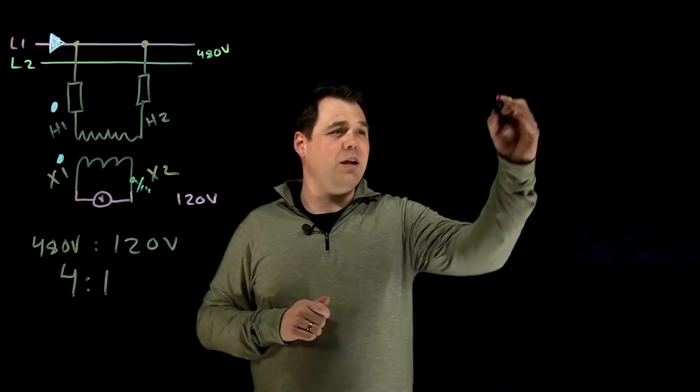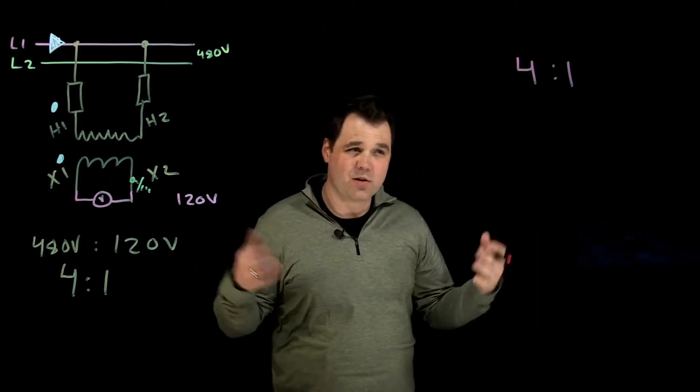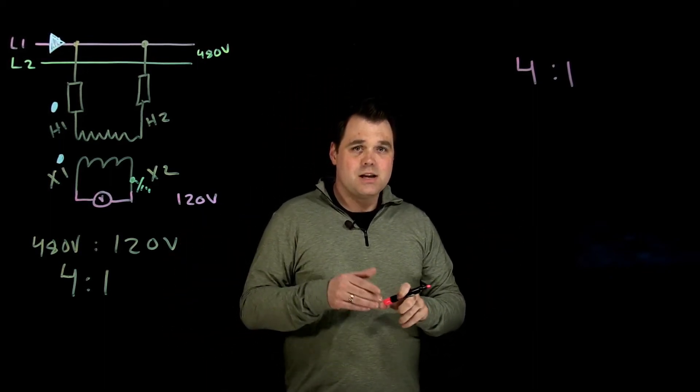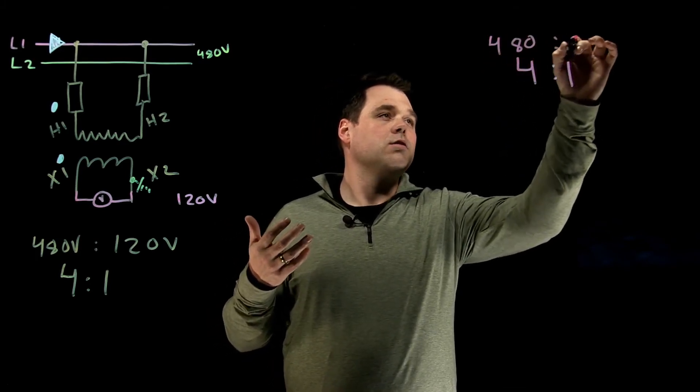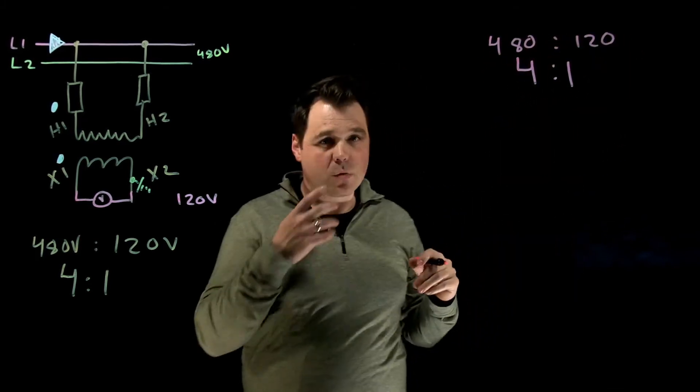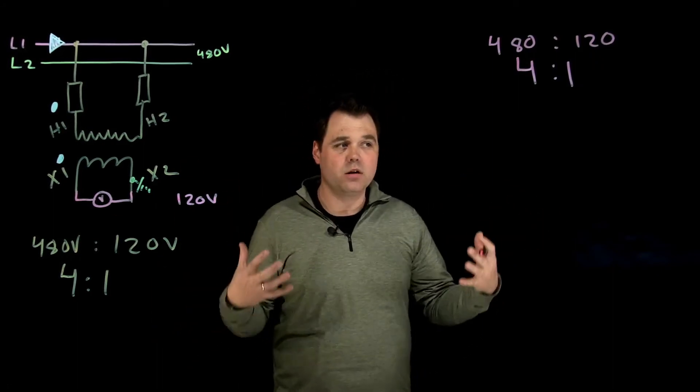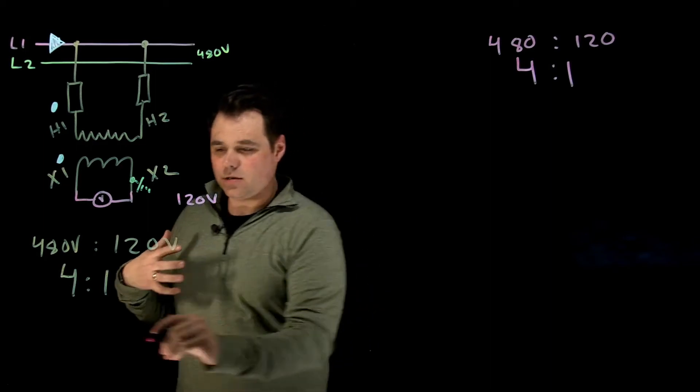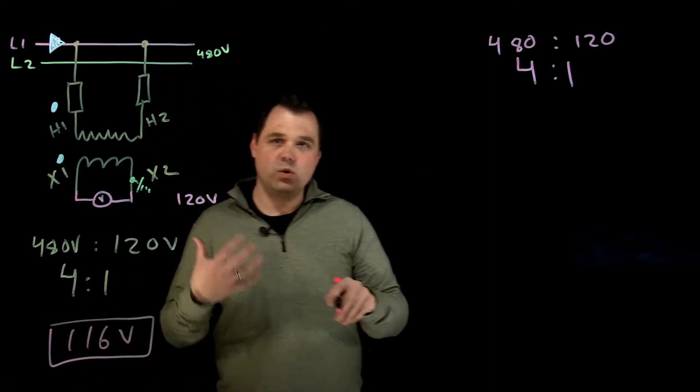In this case, we said we had a four to one ratio. So this is our calculation example, a 480 to 120 ratio. What if when I go read this volt meter, what if that volt meter reads on the display 116 volts?